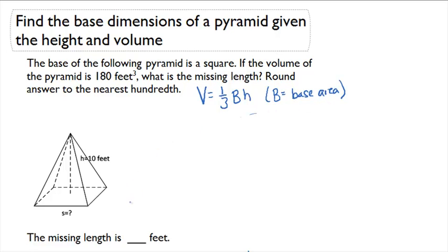So let's take a look at the problem. In the problem, we know the height is 10 feet, and it looks like we're solving for the missing dimension of the square, which is S. So let's first set up our problem and figure out what the base area has to be. So in this problem, we would have 180 equals 1 third times capital B, the base area which we do not know, times the height which is 10.